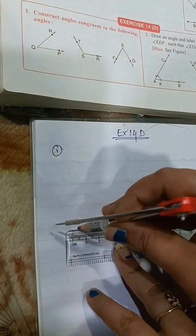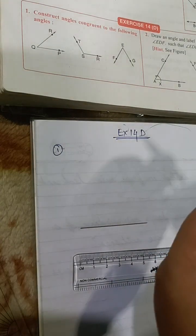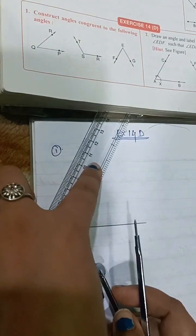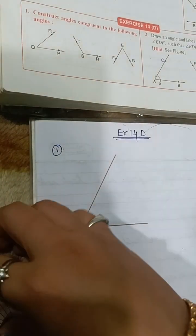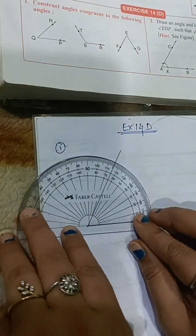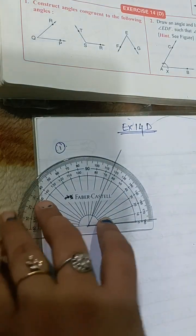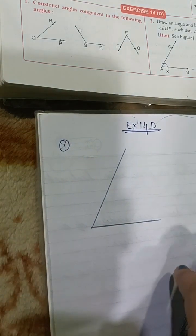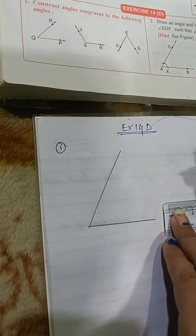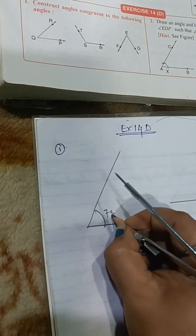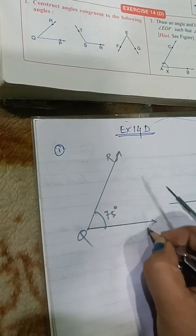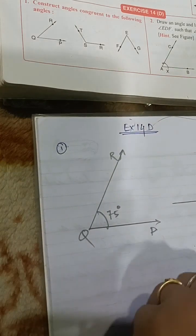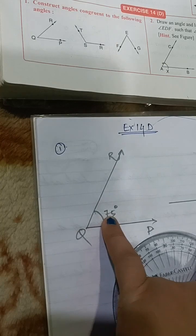For question number one, when we construct angles congruent to the following angles, we have to first measure the angles. Suppose this angle is 75 degrees. Now we have to draw the same angle here. This angle is 75 degrees — this is R, Q, and P. So the same angle we have to construct — another angle which measures 75 degrees.